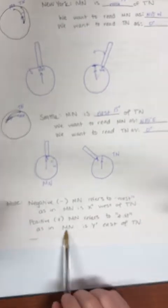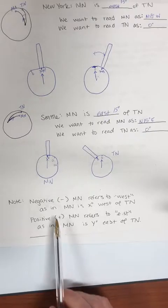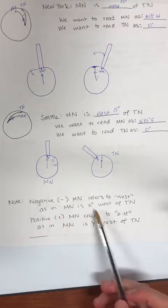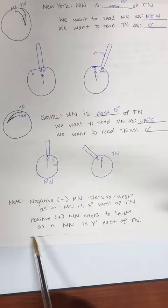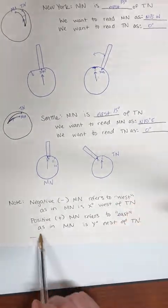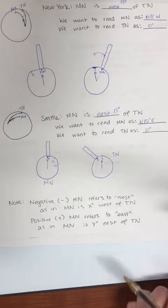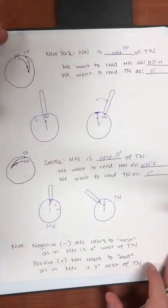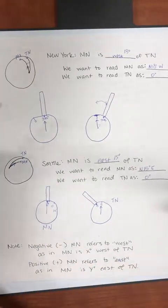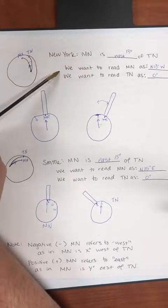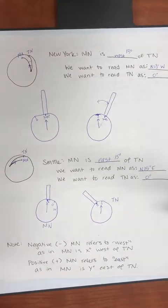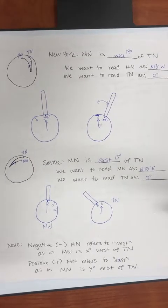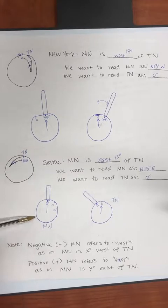A quick review on notation: a negative magnetic declination refers to magnetic north being west of true north, while a positive declination means magnetic north is east of true north. I prefer drawing a picture rather than memorizing — for example, in Athens, Georgia, you'd want to read magnetic north as north 6 east. If you draw yourself a little picture of what you want to read magnetic north as, you will never screw up setting your Brunton.